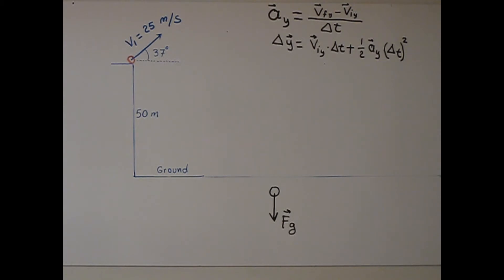Vertical component of the projectile motion. Since net force is Fg, basically G, 9.8 Newton per kilogram. So, acceleration will be 9.8 meter second square down.